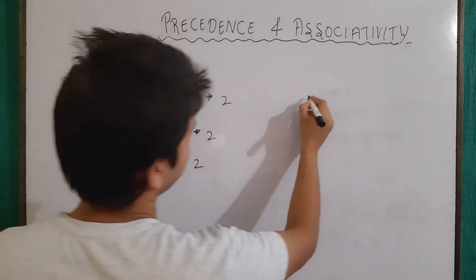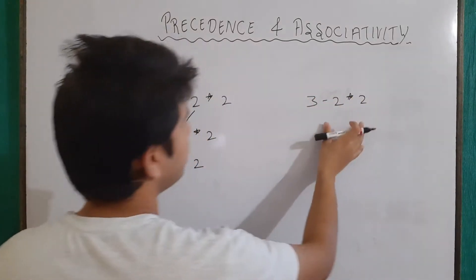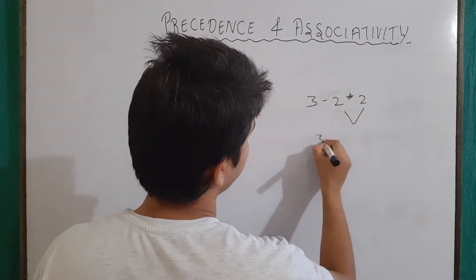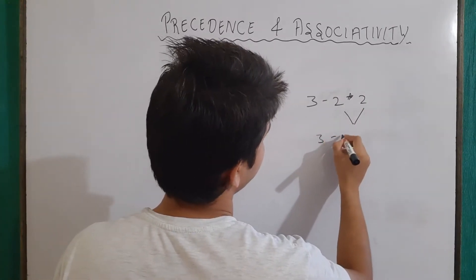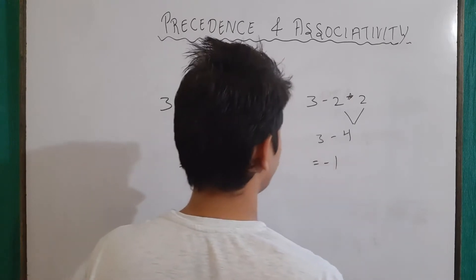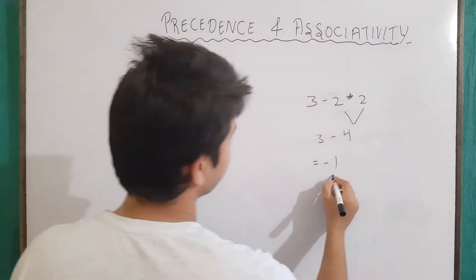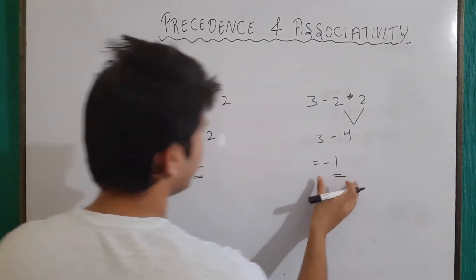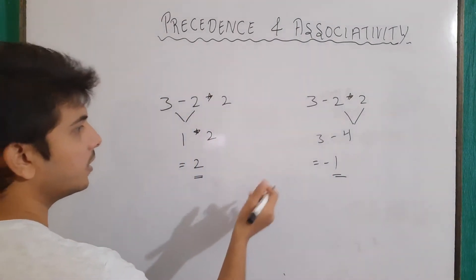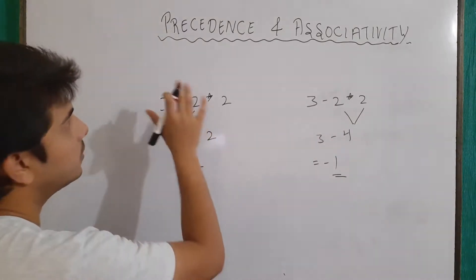Now let's take another way. In this way, we will first perform the asterisk operation, so it will give us 3-4, and then our final output will be minus 1. So in one way we are getting output as 2, and in another way we are getting output as minus 1. Now which of these is correct? For that, we have to first use the precedence.